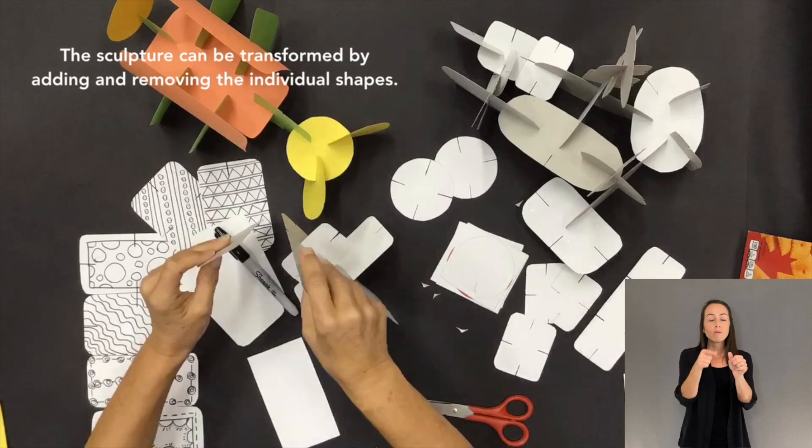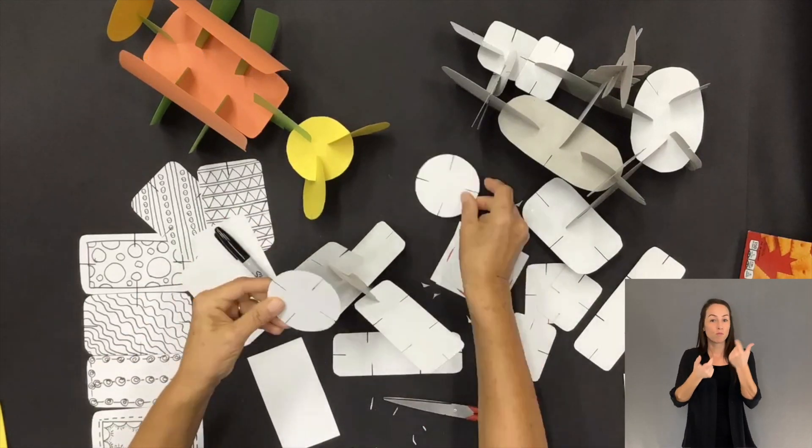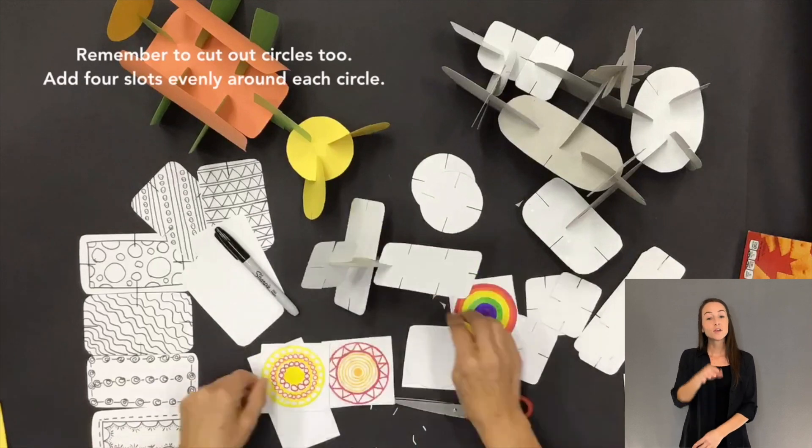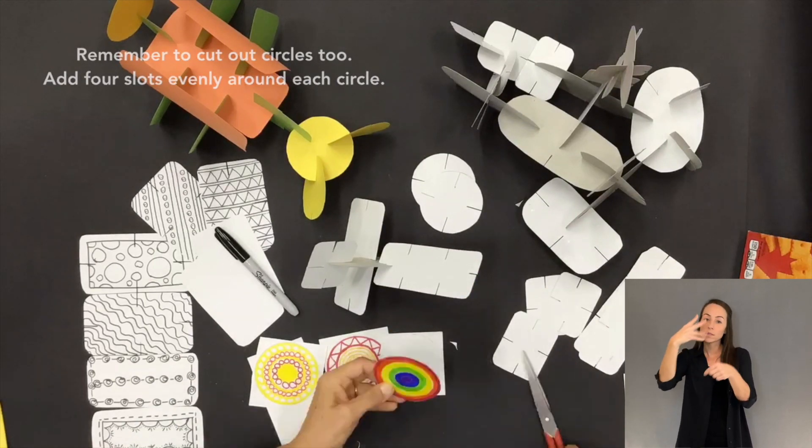The sculpture can be transformed by adding and removing the individual shapes. Remember to cut out circles too. Add four slots evenly around each circle.